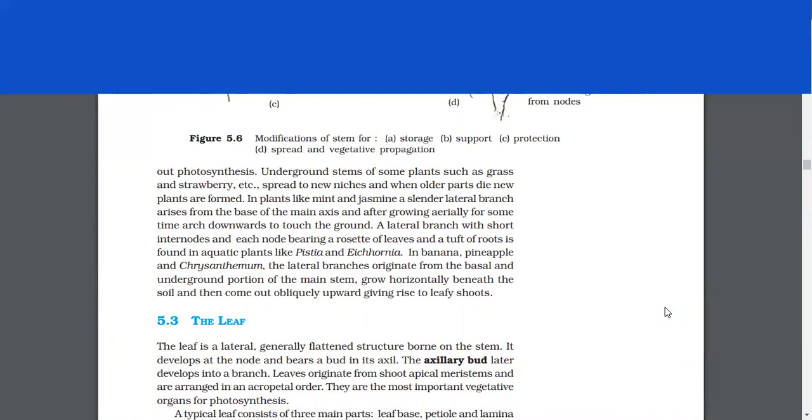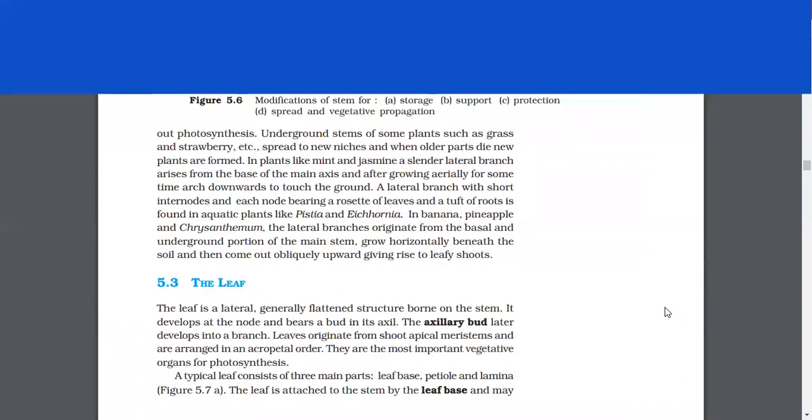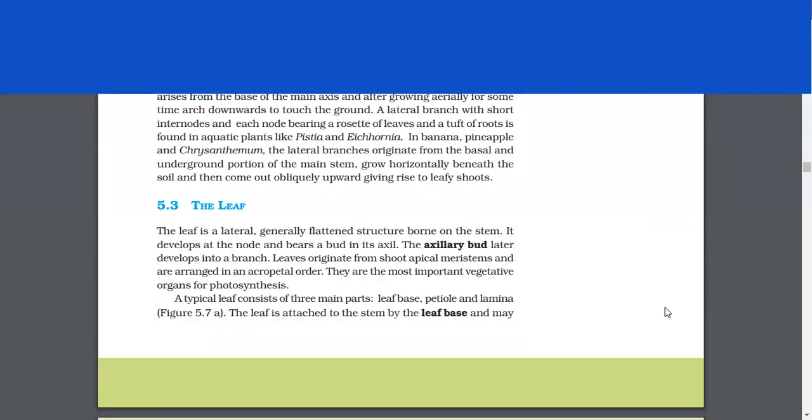In plants like mint and jasmine, a slender lateral branch arises from the base of the main axis and after going aerially for some time, arch downwards to touch the ground. A lateral branch with short internodes and each node bearing a rosette of leaves and a tuft of roots is found in aquatic plants like Pistia and Eichhornia. In banana, pineapple, and chrysanthemum, the lateral branches originate from the basal and underground portion of the main stem, grow horizontally beneath the soil and then come out obliquely upward giving rise to leafy shoots.